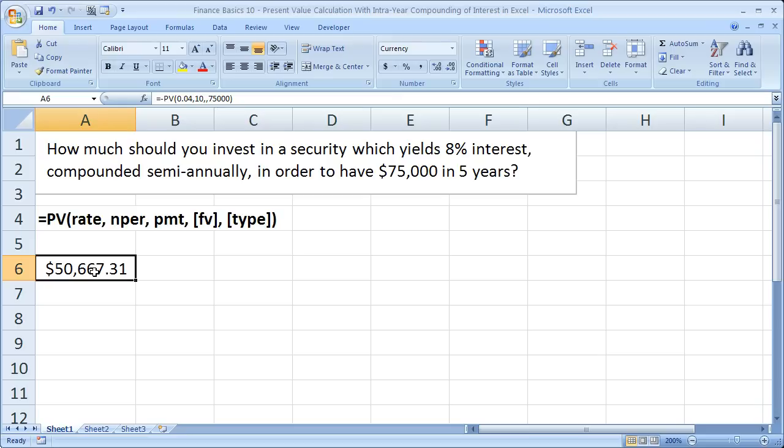Alright, now I want to make sure that I go over with you again how to account for different compounding periods. So semi-annual, quarterly, monthly. Okay? So I'm going to go through a little bit slower and teach you a neat way to try and help you remember it. So equals PV, open parentheses.